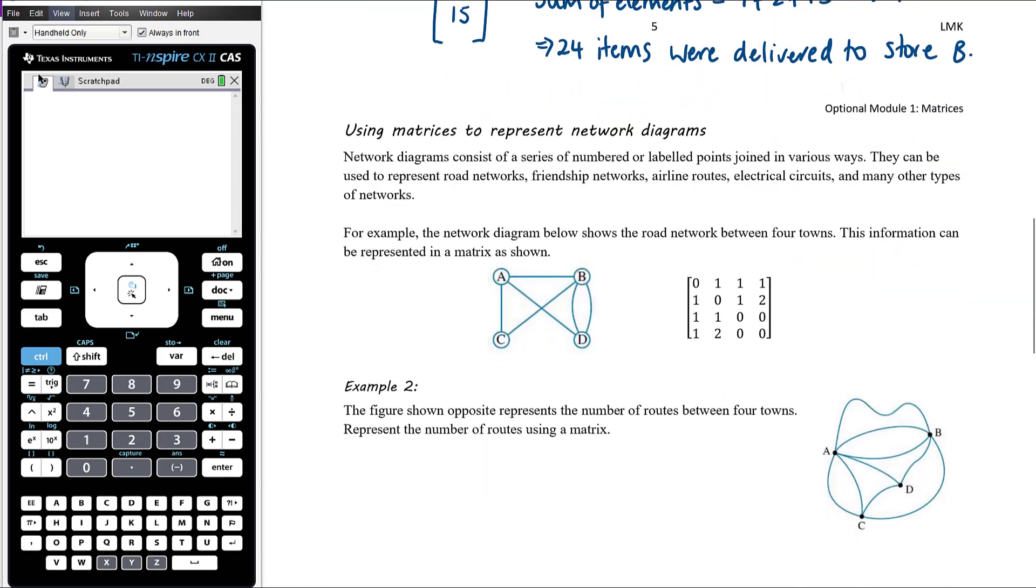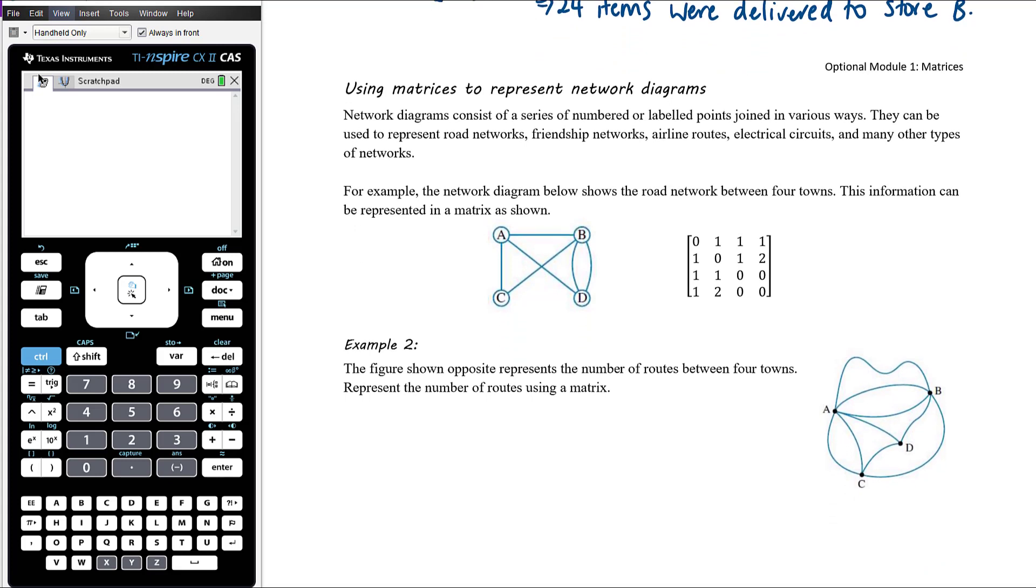One other key application we look at in this module is representing network diagrams as matrices. So network diagrams consist of a series of numbered or labelled points, which are called nodes, joined in various ways. And they can be used to represent lots of different things in which there are networks. So literally road networks or friendship networks, airline routes, electrical circuits, all sorts of other things where there's connections and relationships between different people, different places, or whatever it might be.